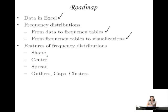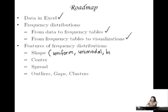In particular, we're going to be looking at their shape. There are a couple of shapes you should know after this: uniform distributions, unimodal, bimodal, and a special one called normal.